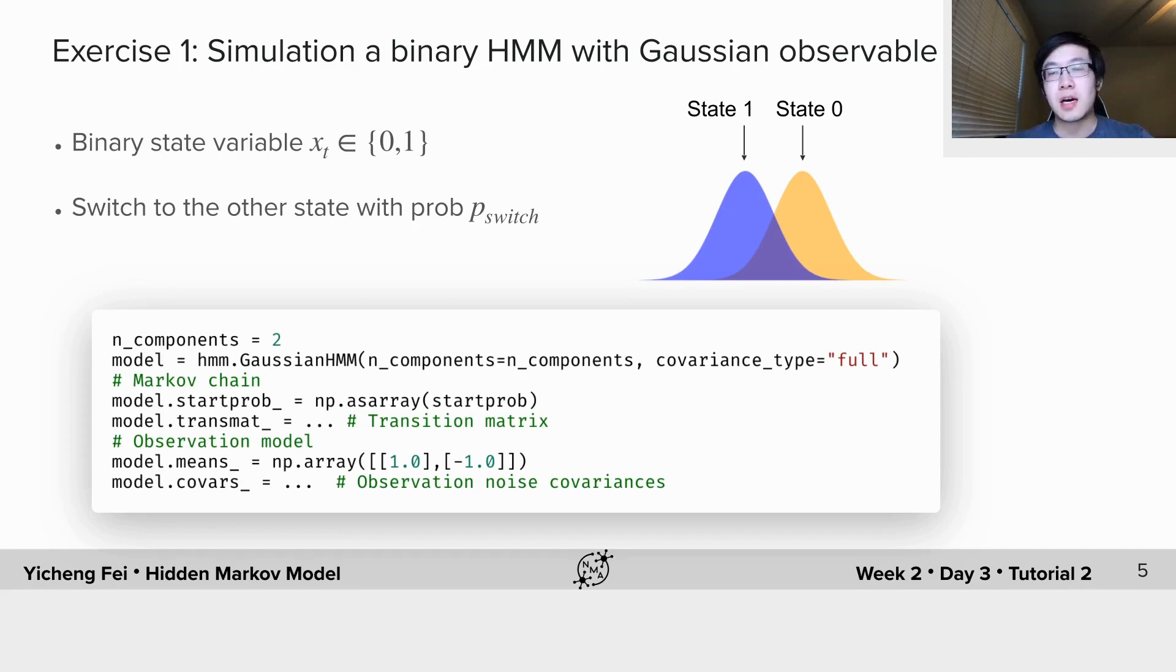At any given time, you will either be in state 0 or state 1, and the probability to switch to the other state is defined by the quantity p-switch. Correspondingly, the probability to stay in the old state is 1 minus p-switch.